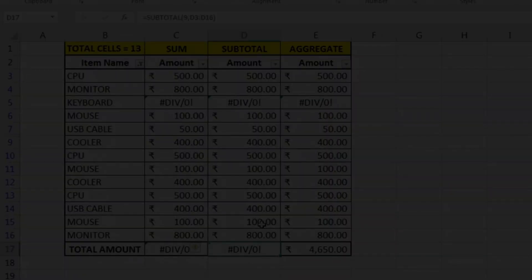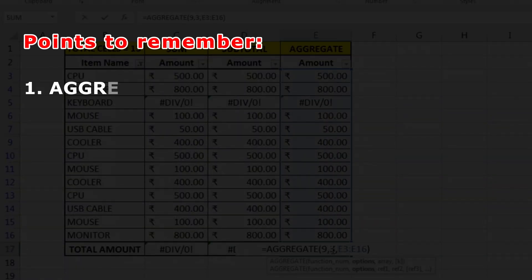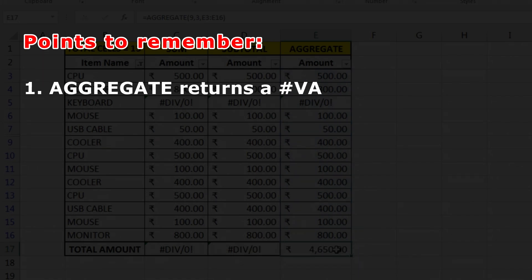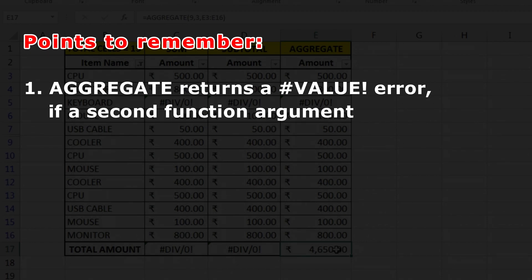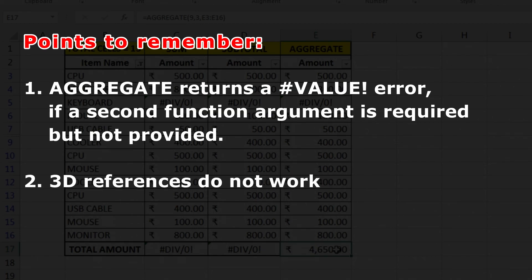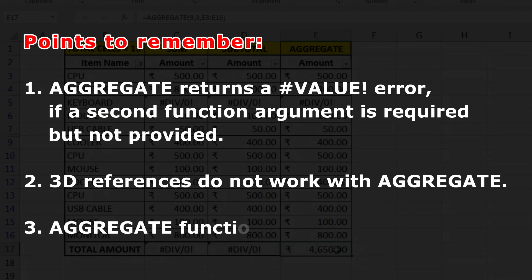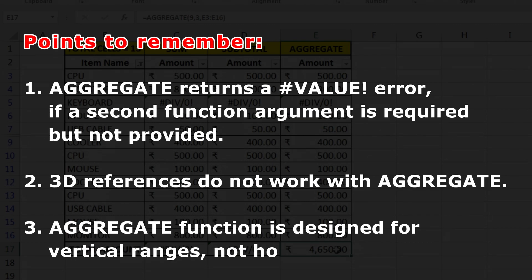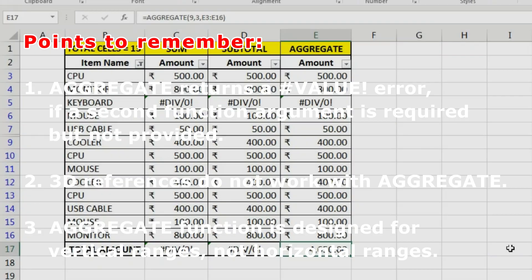Note these three important points about the AGGREGATE function. First, AGGREGATE returns a #VALUE! error if the second argument (k) is required but not provided. Second, 3D references do not work with the AGGREGATE function. Third, AGGREGATE is designed for vertical ranges, not horizontal ranges.